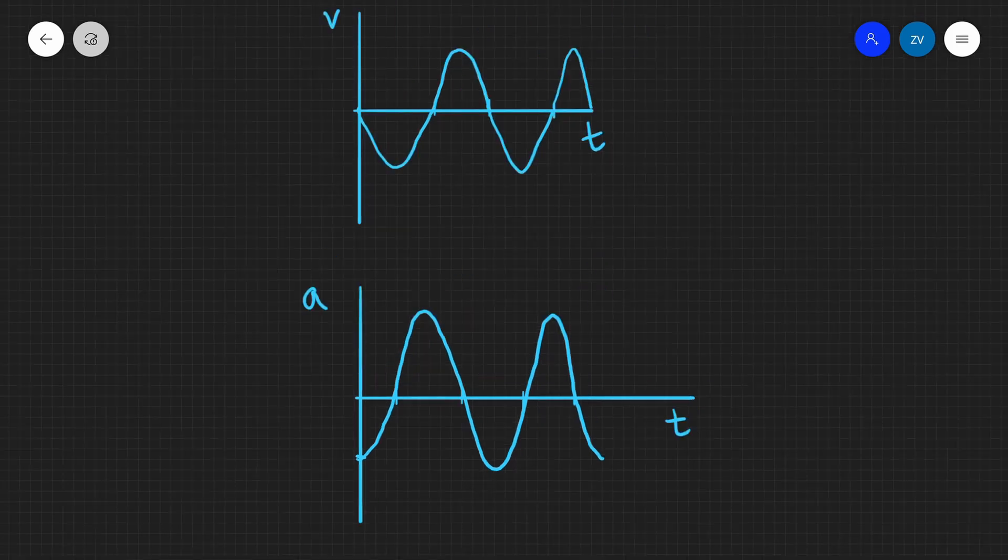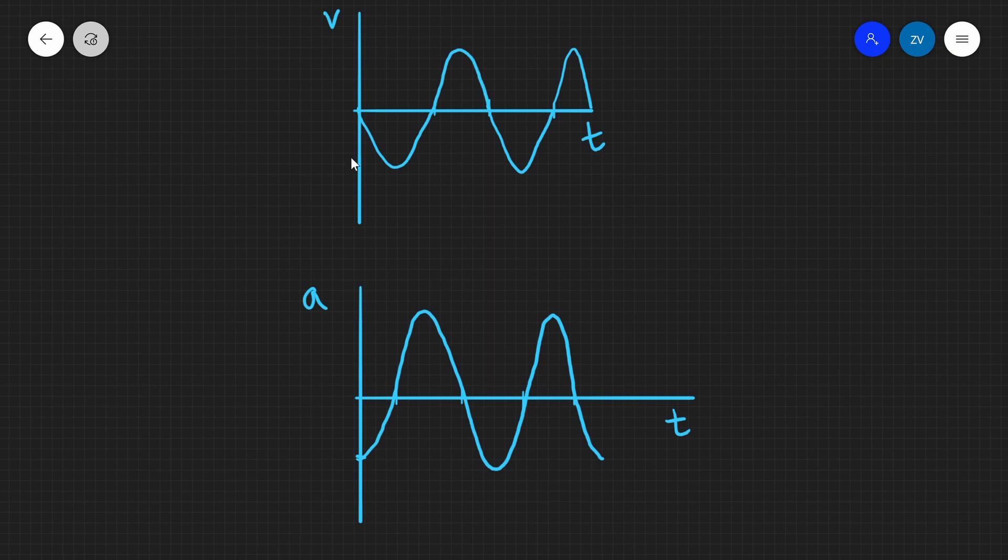Notice, though, that whenever there is a peak in this graph over here, the velocity time graph, that corresponds to the acceleration being zero. For instance, there's another peak over here, which corresponds to this being zero.